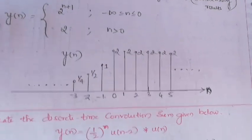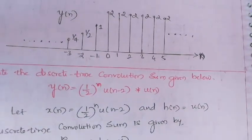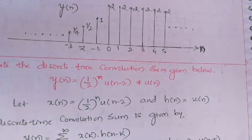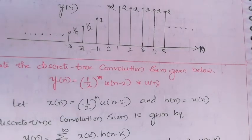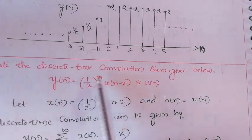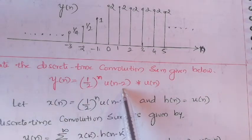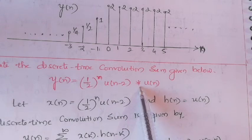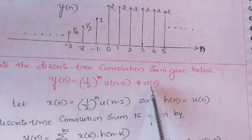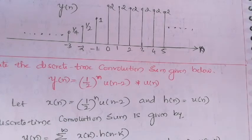As homework, evaluate the discrete-time convolution sum: y(n) = (1/2)^n times u(n minus 2) convolved with u(n). Try this and put the answer in the comment box. Thank you.